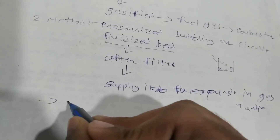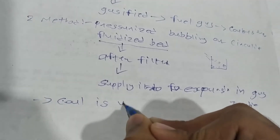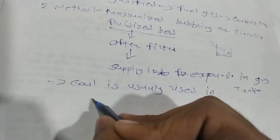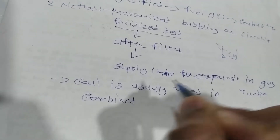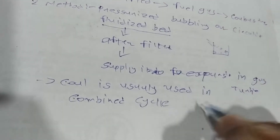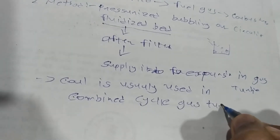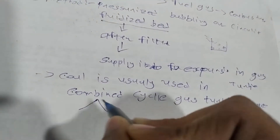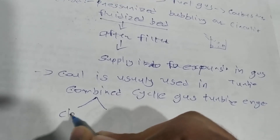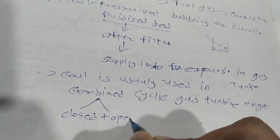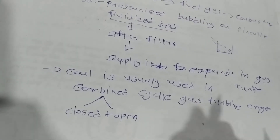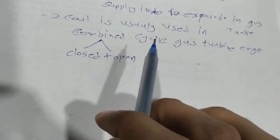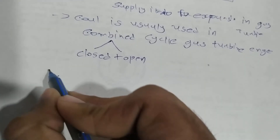Coal is usually used in combined cycle gas turbine engines. The combined cycle gas turbine engine is the product of both closed and open cycles combined together, and that is what we call a combined cycle gas turbine engine.